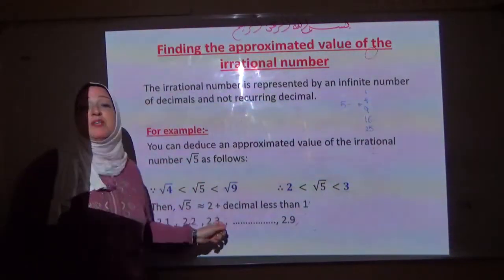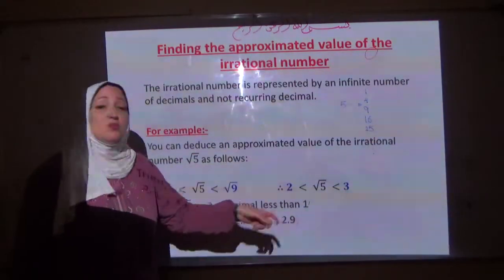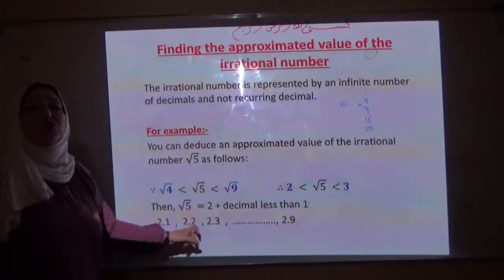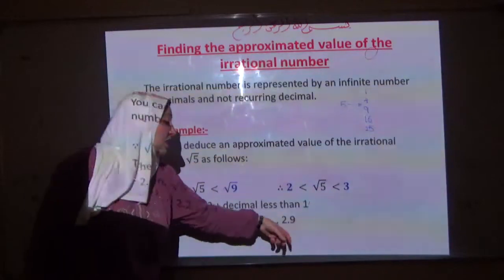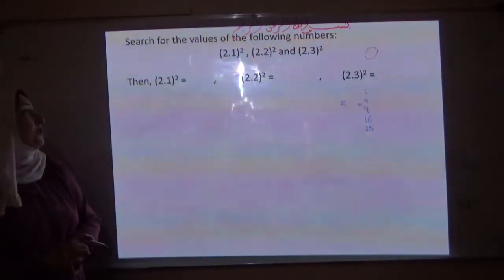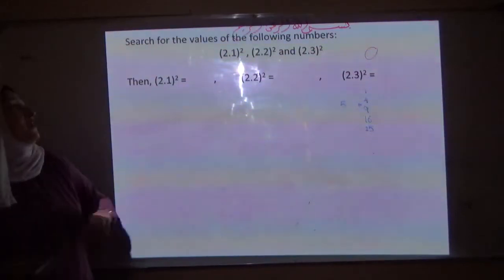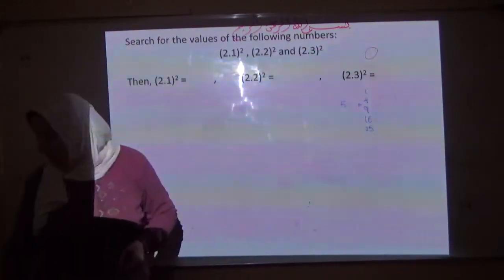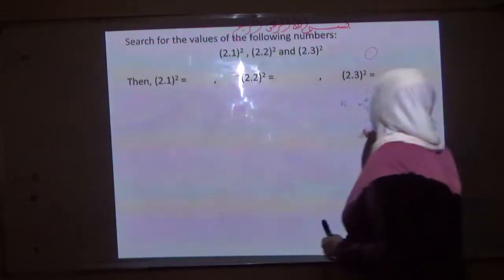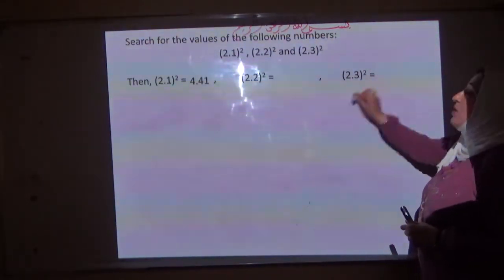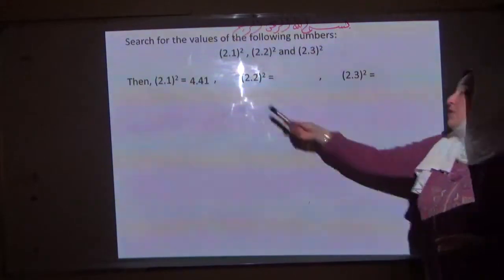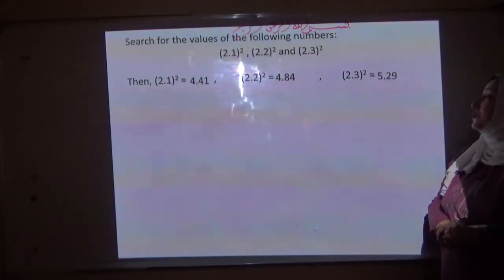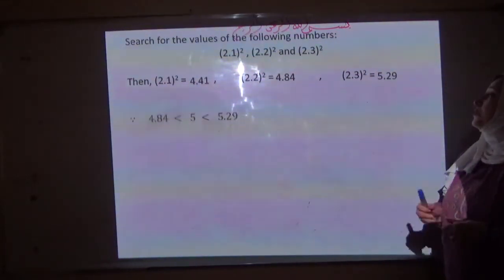That means it is approximately equal to 2 point something less than 3 — that is, 2.1, 2.2, 2.3, and so on up to 2.9. Now let us search for the values of 2.1 squared, 2.2 squared, and 2.3 squared. 2.1 squared equals 4.41. 2.2 squared equals 4.84. 2.3 squared equals 5.29.